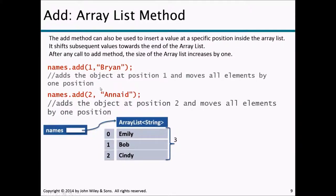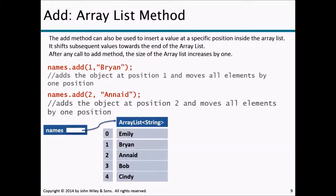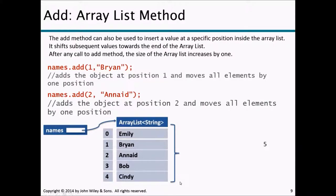Starting from the original list of Emily, Bob, and Cindy at indices 0, 1, and 2, we added two more items. Brian was added at index 1 and Anaheed at index 2. All existing elements are shifted to make space for the new items at specific locations. The size of the ArrayList is now 5.